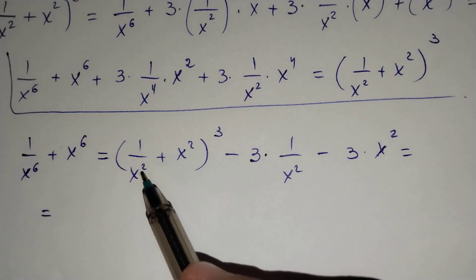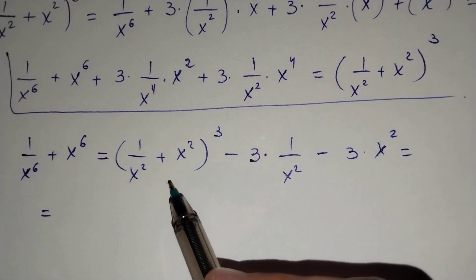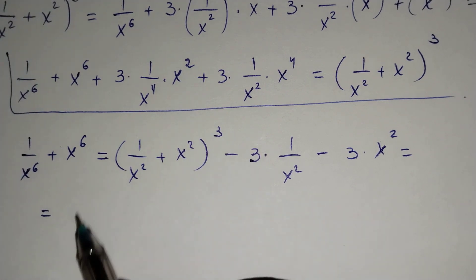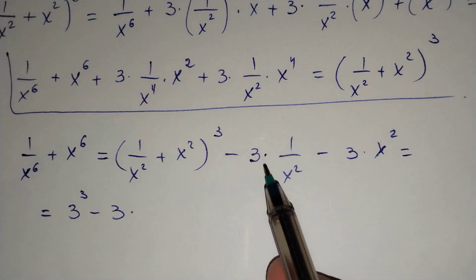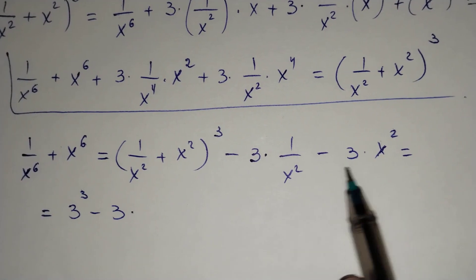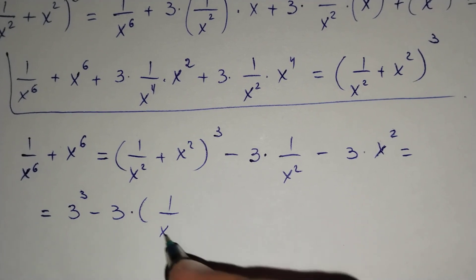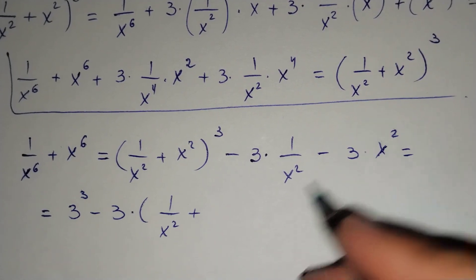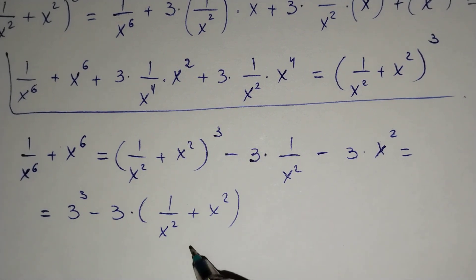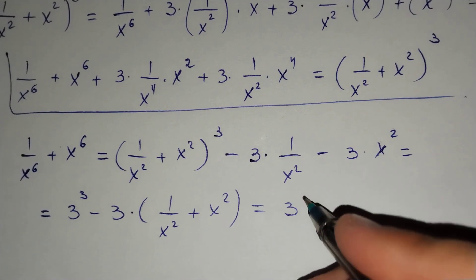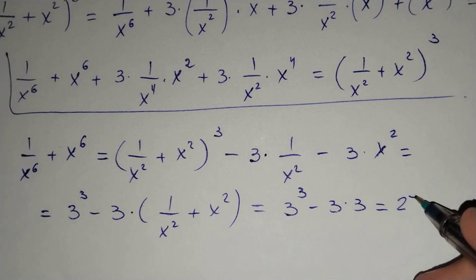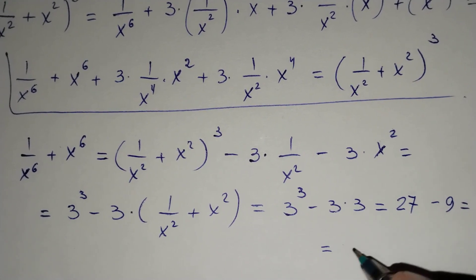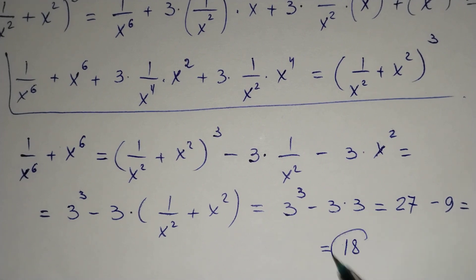We know that 1 over x squared plus x squared equals 3 for our problem. So this becomes 3 cubed minus 3 times (1 over x squared plus x squared), which equals 3 cubed minus 3 times 3. And if we find this, it equals 27 minus 9, which is 18. This is our final answer.